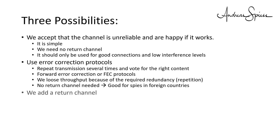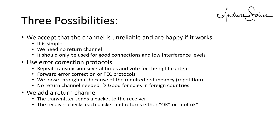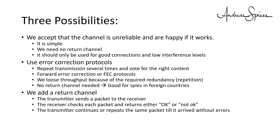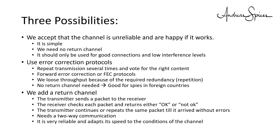The last protocol needs a return channel. The transmitter sends a packet to the receiver; this packet includes some code to decide if it was received correctly. The receiver checks each packet and returns either OK or not OK. The transmitter continues with the next packet or repeats the same packet until it arrives without errors. This protocol needs two-way communication, is very reliable, and adapts its speed to the conditions of the channel. On a good channel, you do not lose a lot of throughput. If you encounter a short interference, the throughput will be reduced, but as soon as the interference disappears, the channel operates again at full speed. And the transmitter always knows if the content arrived — much better for transferring money.